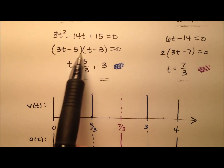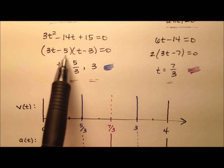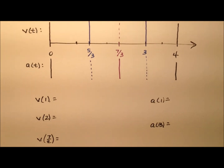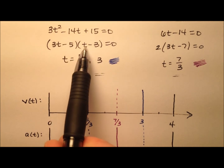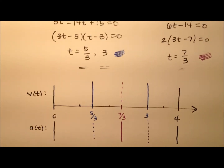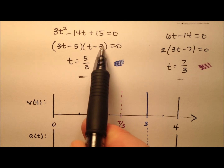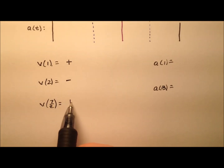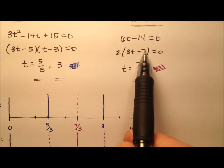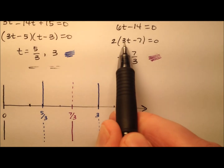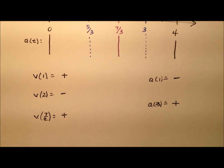Using the factored forms to determine signs: at t equals 1, we get (3 minus 5)(1 minus 3) = (negative)(negative) = positive. At t equals 2, we get (positive)(negative) = negative. At t equals 7 halves, we get (positive)(positive) = positive. For acceleration at t equals 1: 3(1) minus 7 is negative. At t equals 3: 3(3) minus 7 equals 2, which is positive. So we have our signs for both functions.